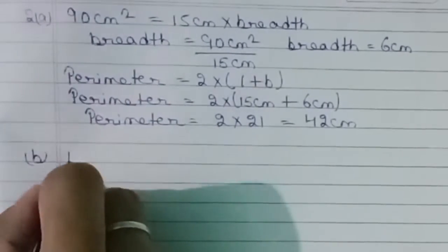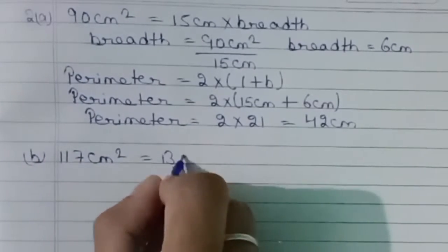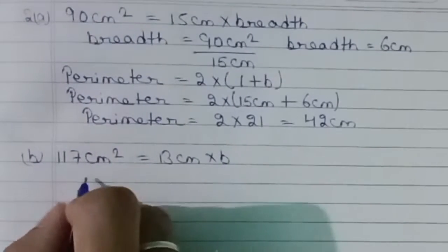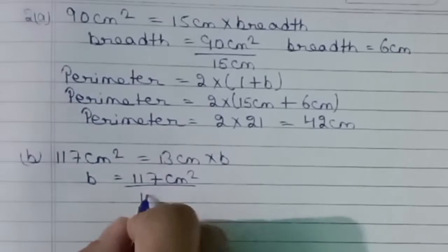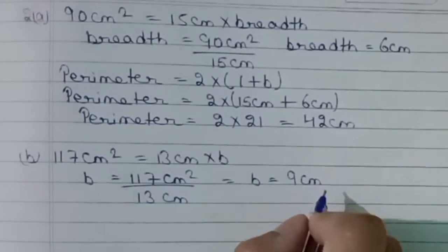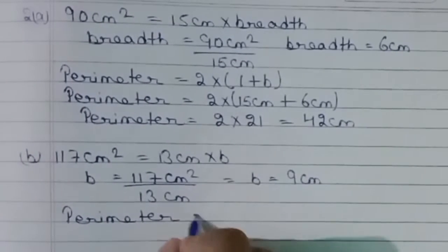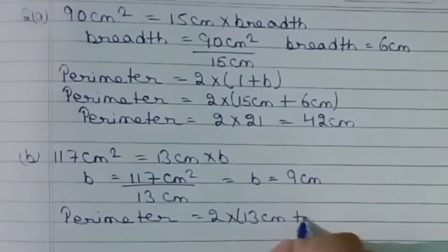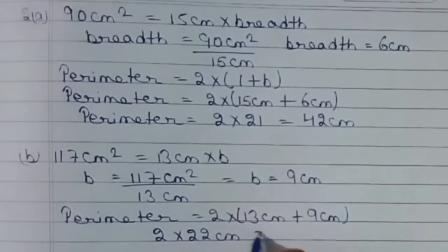Part B: Similarly, divide area by length: 117 ÷ 13 = 9 cm. Perimeter = 2 × (13 + 9) = 2 × 22 = 44 cm.